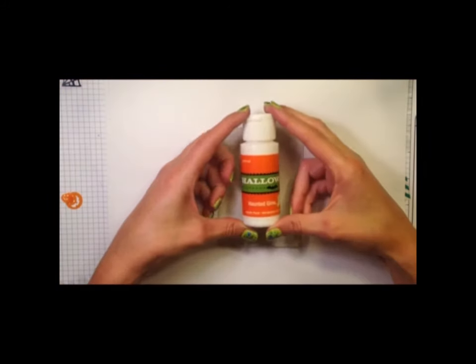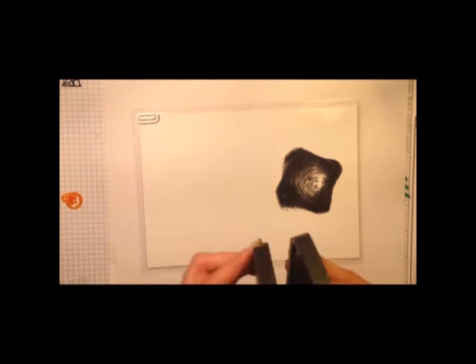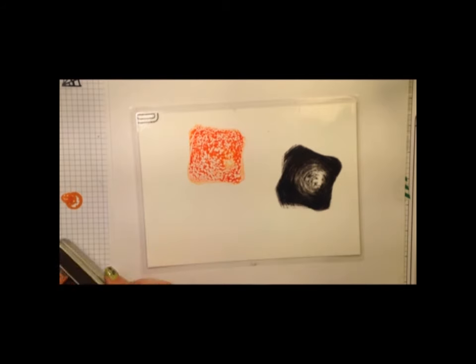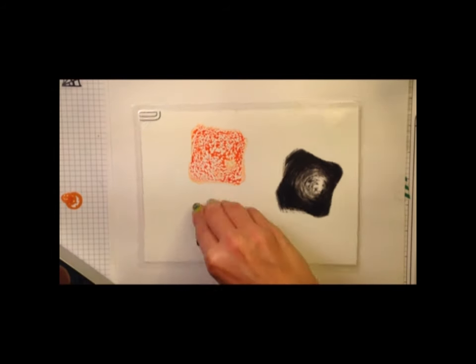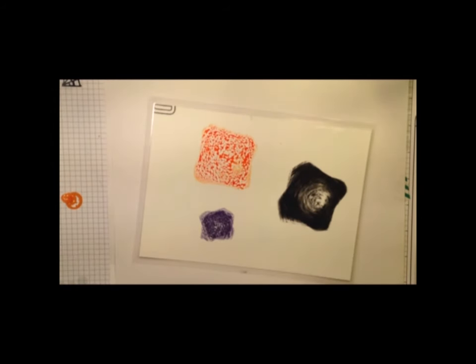Our last bit of inking will be creating splatters on our background using all the colors that I used in the tree and also some glow in the dark paint, which is going to be super fun.